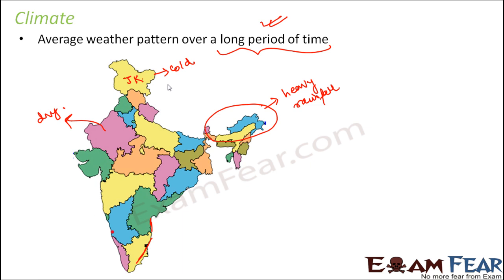So how do we arrive at this conclusion on climate? What is done actually is for every location, for example, Jammu and Kashmir, Rajasthan, northeast states, for every location, we prepare a chart for their weather.